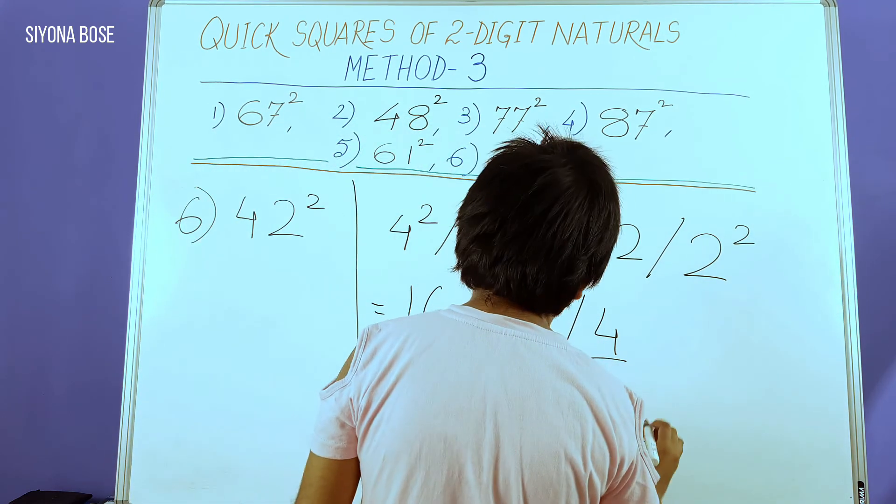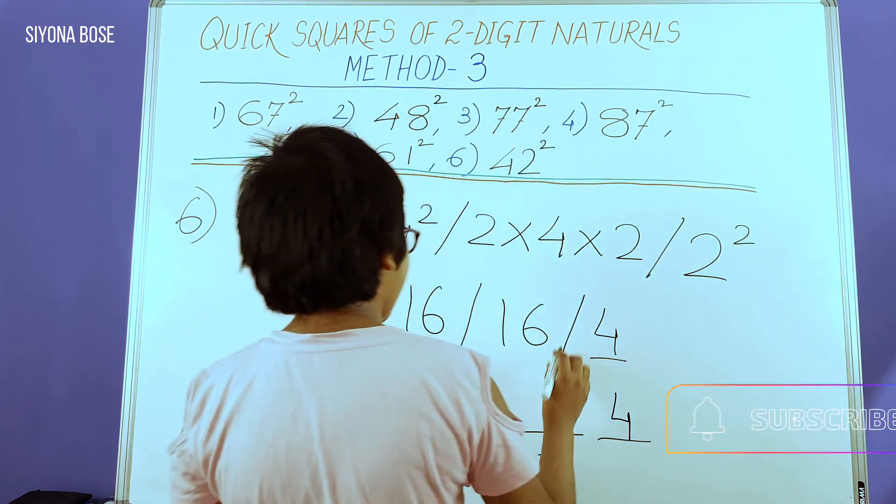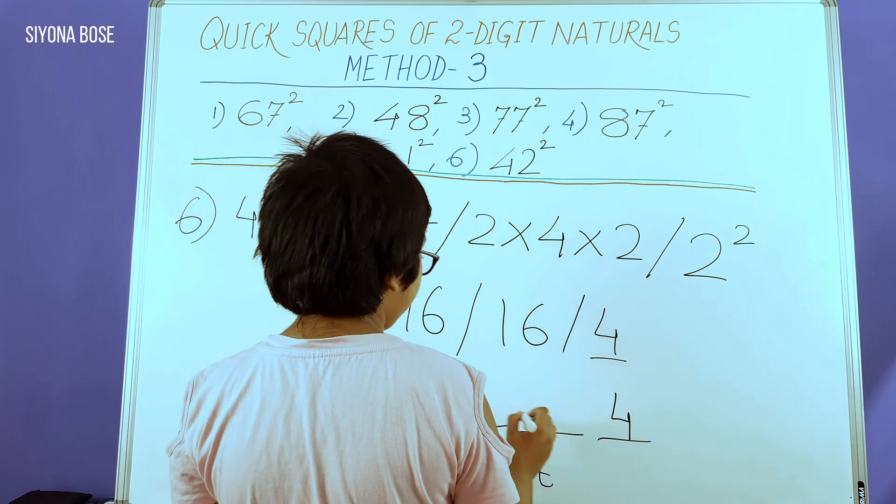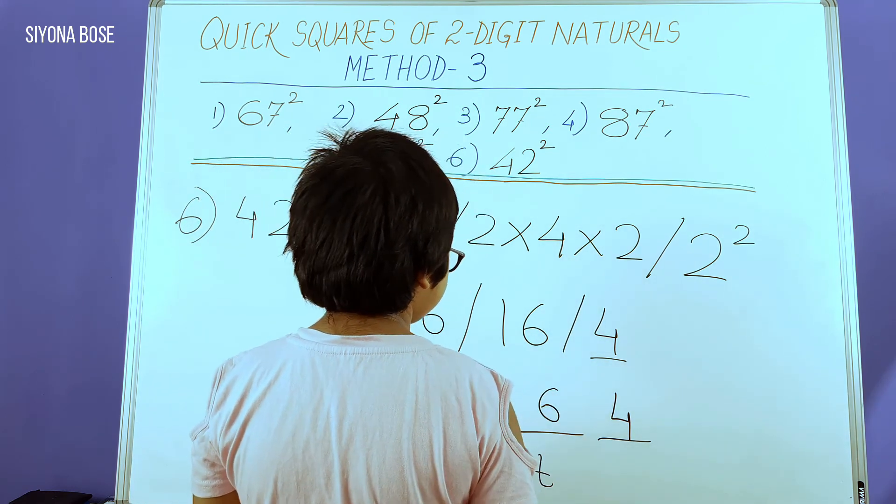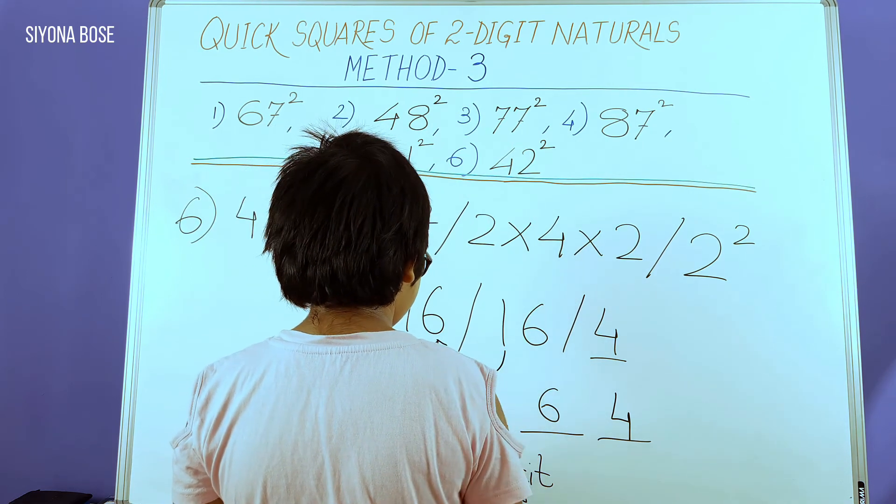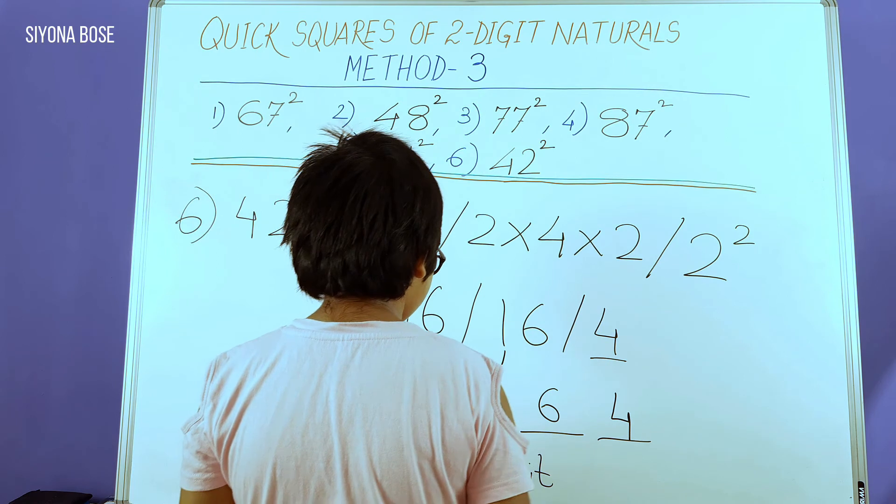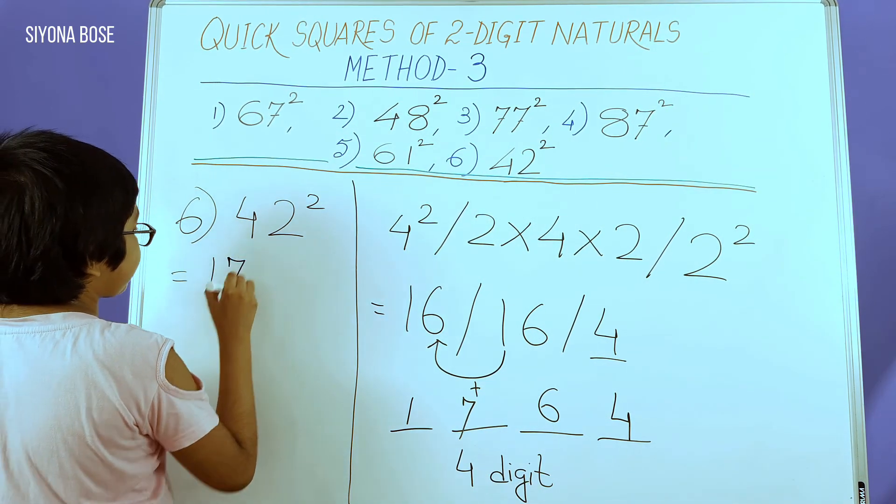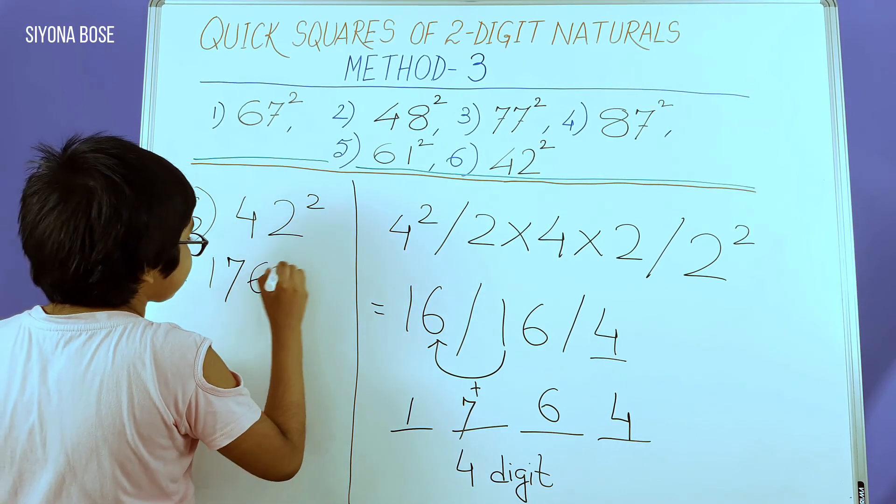Keep the 4 as it is. As we don't have anything to add to 6, we also write the 6 as it is. We add this 1 to 16 to get 17. Wasn't that a piece of cake? 42 squared is 1764.